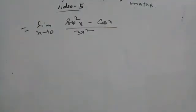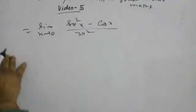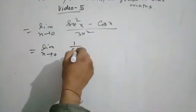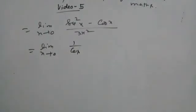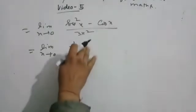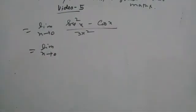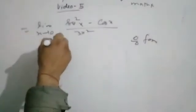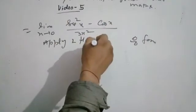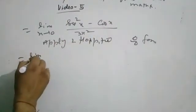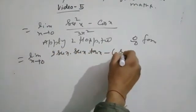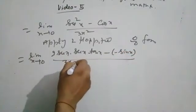Still getting 0/0 form, so we apply L'Hôpital's rule again. Differentiating: the numerator becomes 2 sec²x · tan x + sin x, and the denominator differentiates to 6x.